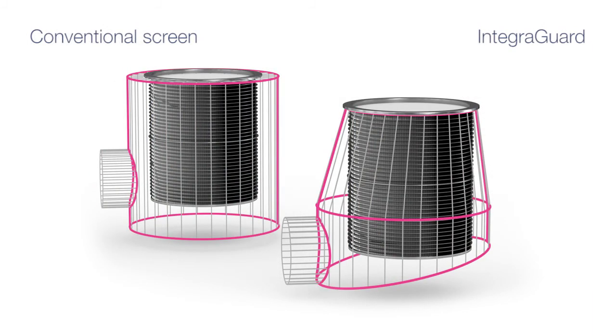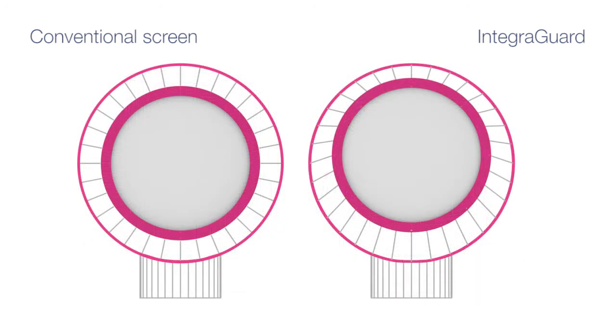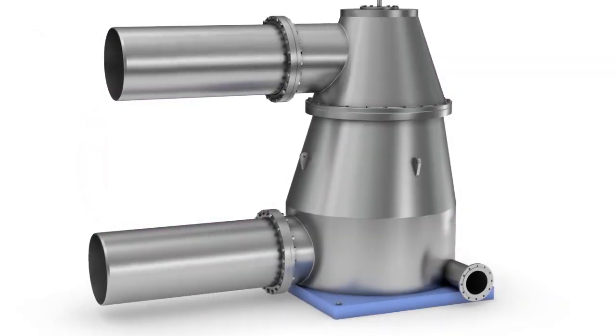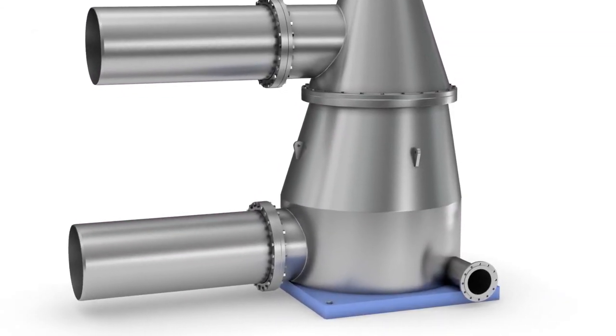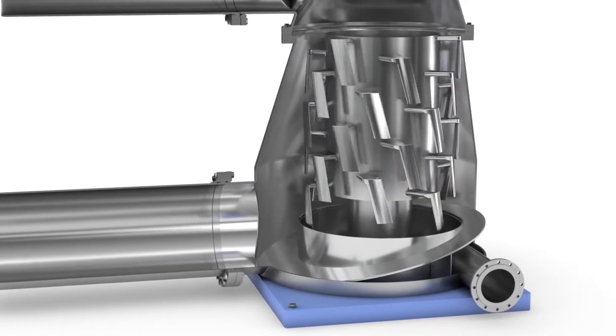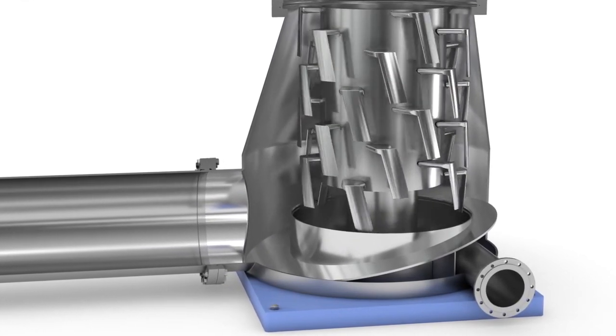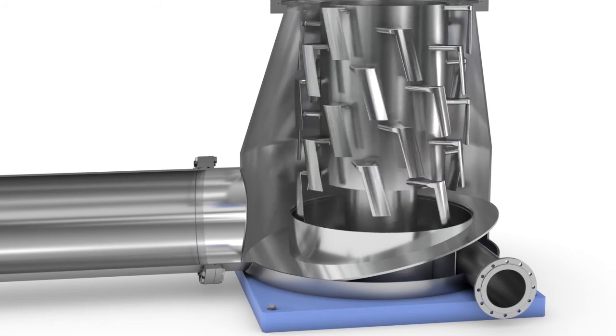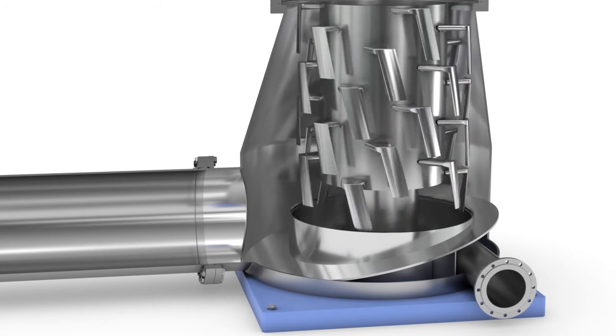This effect is achieved in IntegraGuard through the conical housing design and asymmetrical screen basket support. The accept chamber of the IntegraGuard is electropolished. The reject chamber can also be supplied electropolished. This special treatment reduces arising spinnings and adhesion potential to a minimum.